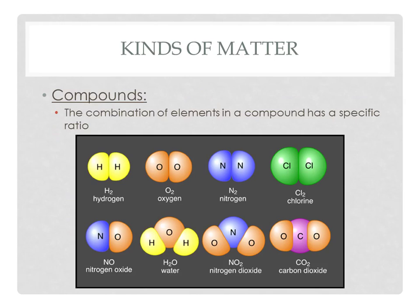In nature, hydrogen, oxygen, nitrogen, and chlorine actually come in pairs — they are attached to each other, which is a specific type of compound we'll discuss later. Other examples include nitrogen oxide, water, nitrogen dioxide (where 'di' means two), and carbon dioxide. Additional examples of compounds include hydroxide and hydrochloric acid, which is HCl.